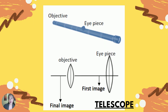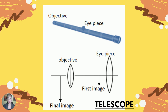Next we have the telescope. This type is a refracting telescope, used to see distant objects. It uses converging lenses — an objective lens and an eyepiece lens. The first image formed by the objective lens is inverted, real, and smaller, while the final image produced by the eyepiece lens is enlarged, inverted, and virtual.